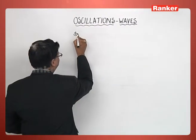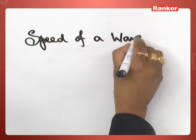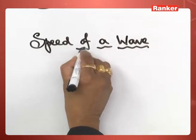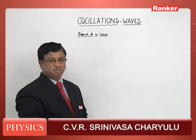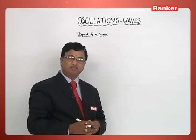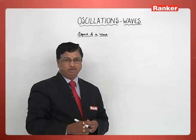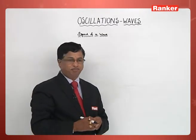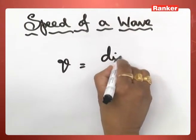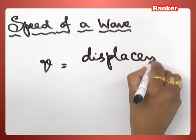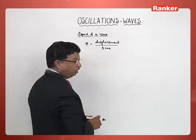Let us consider the speed of a wave. Under this caption, we are going to deal with what is the basic equation for calculating the speed of a wave, and what other factors the speed of sound in particular depends on. Two different aspects we are going to take up here. Whenever we talk about speed of a wave, the general statement is this: speed is displacement divided by time, the rate of displacement of the body, which we call speed.